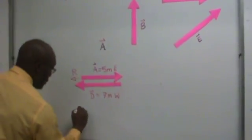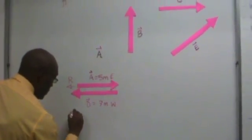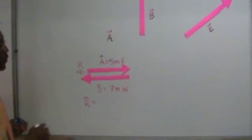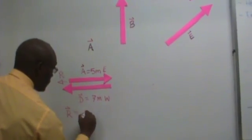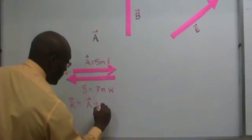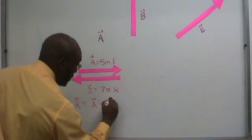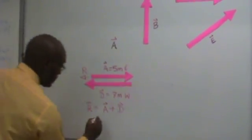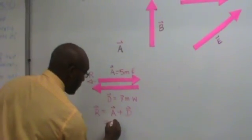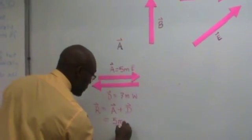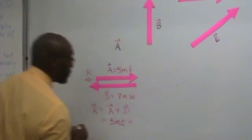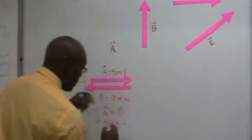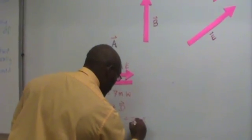Now our resultant is vector A plus vector D. So let's put the numbers in. A is 5 meters east plus D, which is 7 meters west.